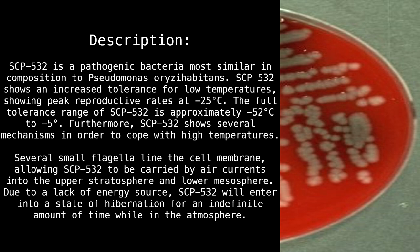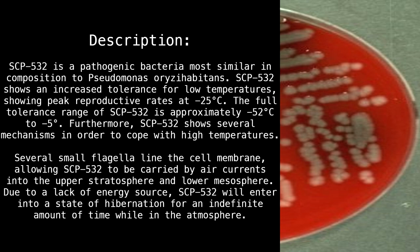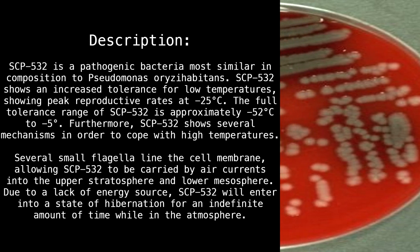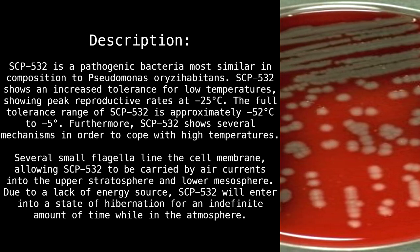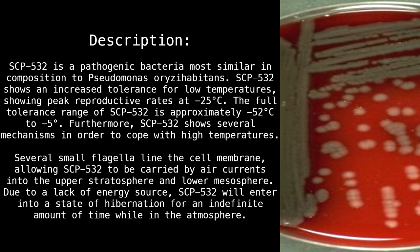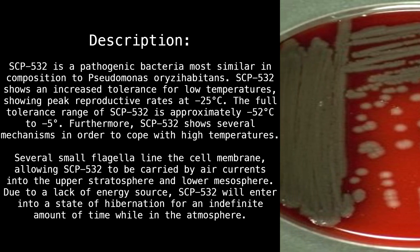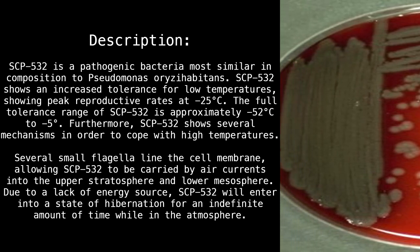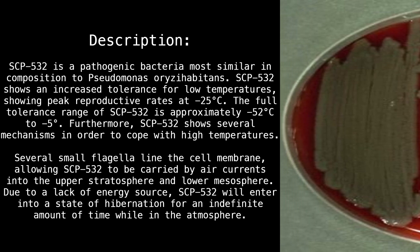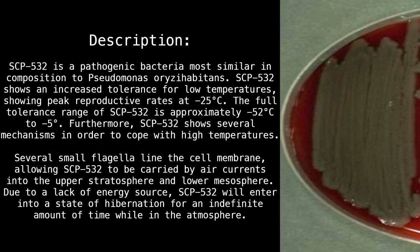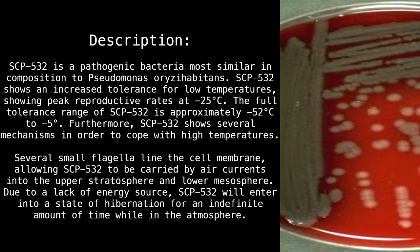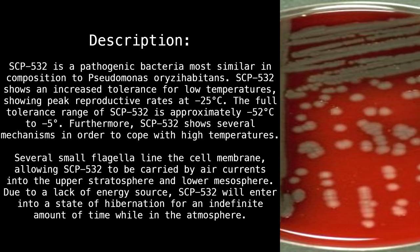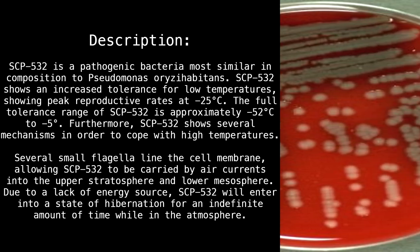Description: SCP-532 is a pathogenic bacteria most similar in composition to Pseudomonas or Izahabitans. SCP-532 shows an increased tolerance for low temperatures, showing peak reproductive rates at negative 25 degrees Celsius. The full tolerance range of SCP-532 is approximately negative 52 degrees Celsius to negative 5 degrees.